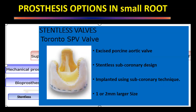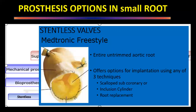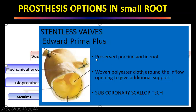The three stentless valves are: first, the Toronto SPV valve — a porcine valve with a sub-coronary design, allowing one to two millimeter larger valve size compared to stented counterparts. Second, the Medtronic Freestyle stentless valve — here the entire untrimmed aortic root is converted into a valve. The Freestyle valve can be implanted by all three techniques: sub-coronary method, inclusion cylinder method, or root replacement method. Third, the Edwards Prima Plus — a preserved porcine aortic root with additional woven polyester, implanted only by the sub-coronary technique.